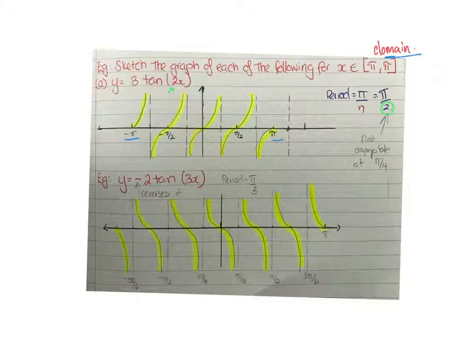The amplitude doesn't really matter. Remember that the first asymptote is at half the period, so half of a half is a quarter, so you got π/4. We've sketched in here π/4, and then we add another period, which would be 3π/4.